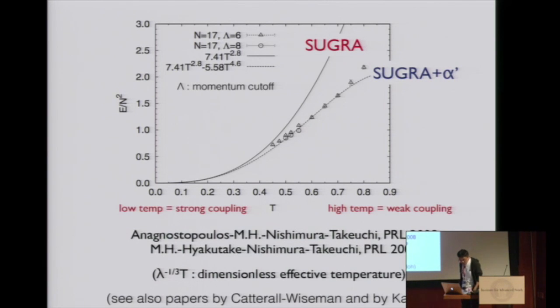It seems that at the strong coupling, gauge-gravity duality is correct. Then this difference from supergravity result should be string α' correction. Actually, as I explained in the next few slides, we can really fit this difference using α' correction.